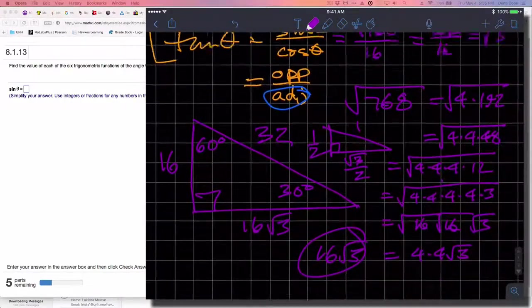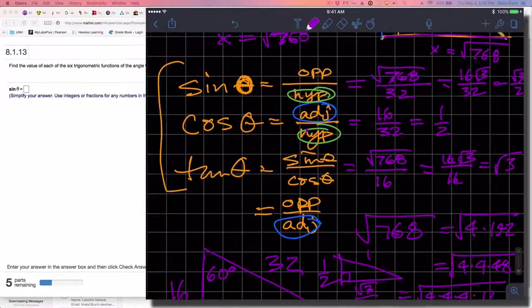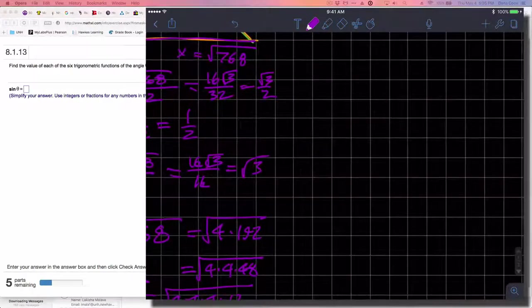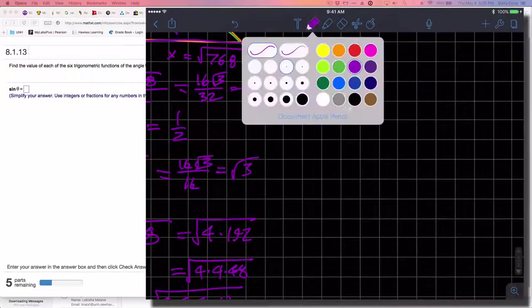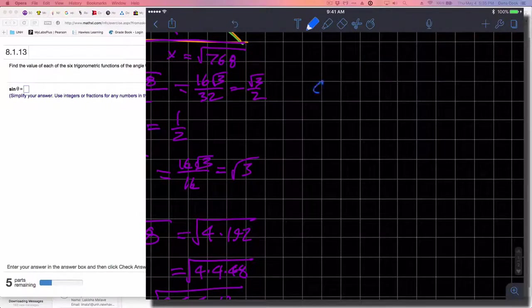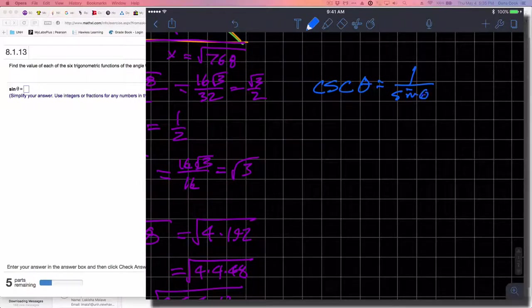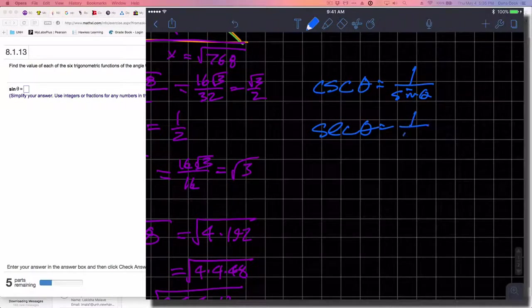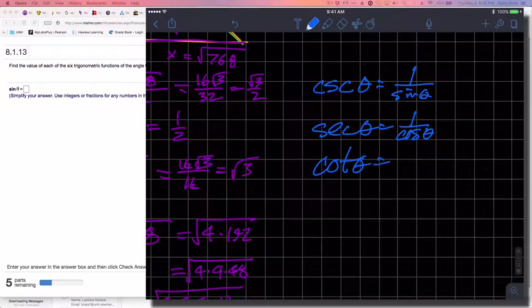I have three of the answers, and now I need the other three to get the full six. The others are the cosecant of theta, which equals one over the sine; the secant of theta equals one over cosine theta; and cotangent of theta equals one over tangent, or cosine over sine.